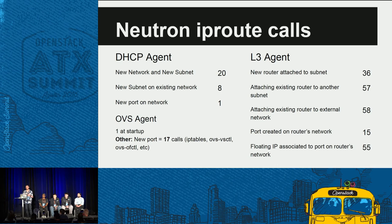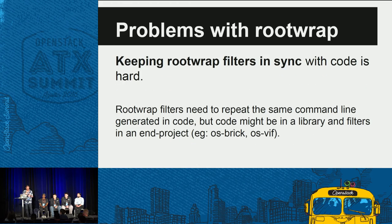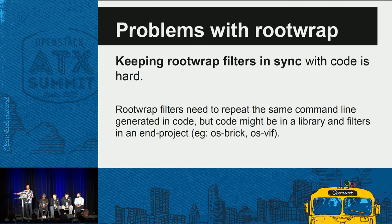If you broke into a Nova compute server — a buffer overrun in the JSON decoding library or something like that — you would be running as the Nova compute user and be able to use those RootWrap filters to fairly easily escalate to root. The command lines are also clumsy — they're long and hard to generate. The Neutron IP lib file is 800 lines or more of code that's just there to generate and parse the output of IP route commands. Executing those commands is slow — attaching an existing router to a new subnet is 57 separate calls to the IP command. What they're doing is fundamentally a single netlink call. Also, a problem that came to the front in Liberty and Mitaka was keeping RootWrap filters in sync with the code, especially when code is in a library like OSBrick but the filters are in the end project like Nova.